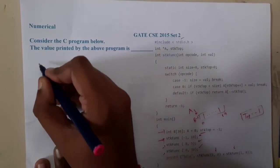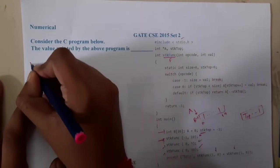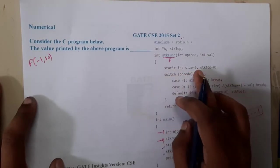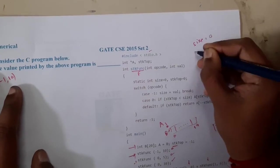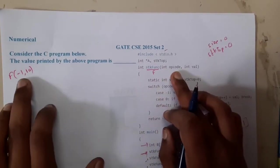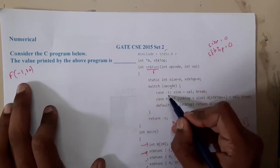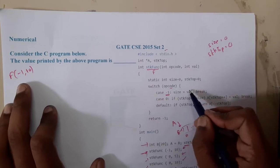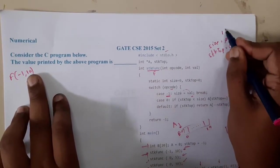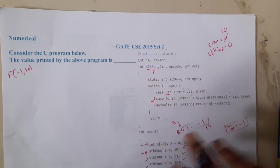Let me rename stk_fun to f for simplicity. So we call f(-1, 10). Inside the function, a static variable size is initialized to 0, and stk_top starts at 0. We check switch(opcode), where opcode is -1. Case -1 executes: it substitutes the value 10 into size. Then we break, so the function returns -1 and we are done with this call.